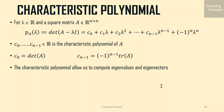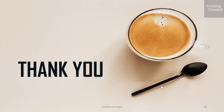Now we will see what a characteristic polynomial is. For λ a real number and a square matrix A, the characteristic polynomial p_A(λ) = det(A − λI), which can be expanded as c₀ + c₁λ + c₂λ² + … + c_{n-1}λⁿ⁻¹ + (−1)ⁿλⁿ. Here c₀ through c_{n-1} are real numbers. In particular, c₀ equals det(A) and c_{n-1} equals (−1)ⁿ⁻¹ tr(A). The characteristic polynomial allows us to compute eigenvalues and eigenvectors. That's all for now, thank you for watching.